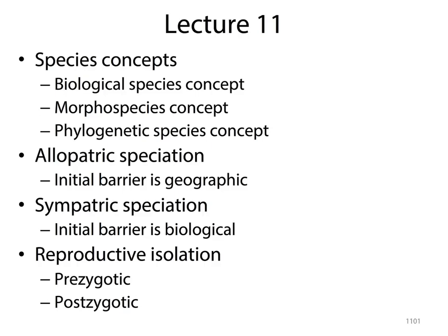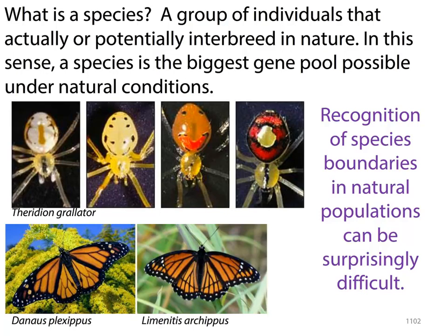So what we're going to talk about today is species concepts. We'll talk about the biological species concept, morphological species, and all sorts of other good stuff. We'll talk about speciation — there are two different examples: allopatric, where you have a geographic barrier, and sympatric, where you don't. We'll also talk about reproductive isolation, because this is what leads to speciation. So the first thing we have to address is really what is a species.